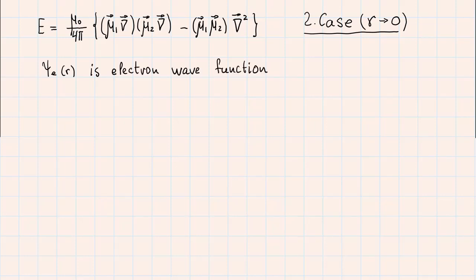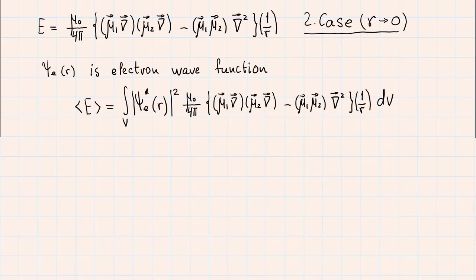Then we can calculate the expectation value of energy of the electron-nuclear interaction energy as average E is equal to the integral over the whole space. And under the integral we have the wave function, electronic wave function, and the expression for energy, which we just inserted here. If we calculate this integral, it will give us some value. However, I am not interested in the calculation of this whole integral. I just want to know a part of it when the integration is performed in a small volume near the coordinate origin where the nucleus is located.